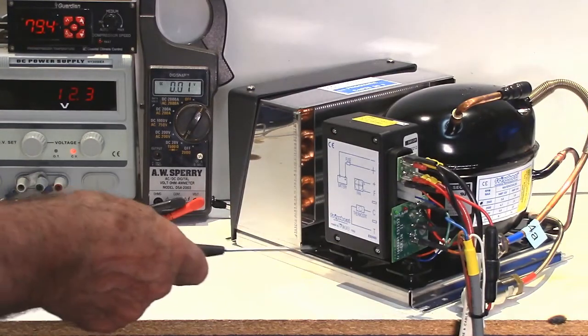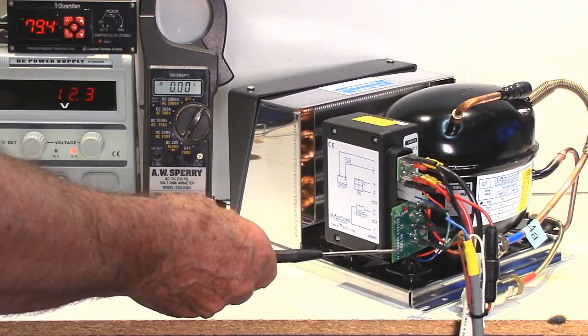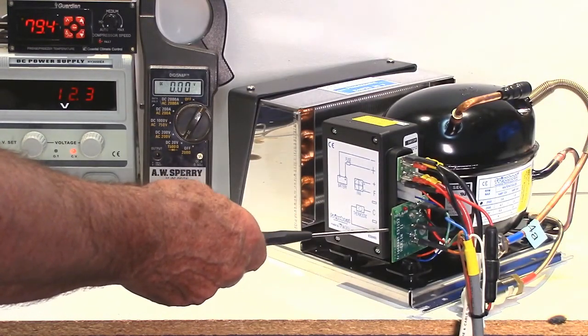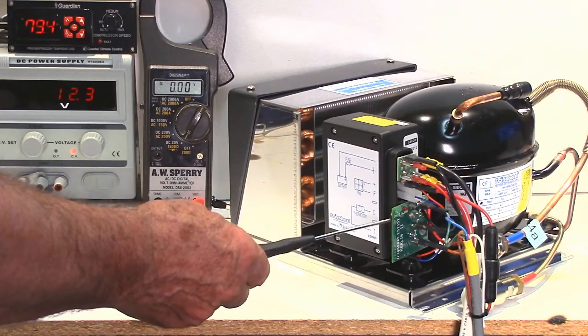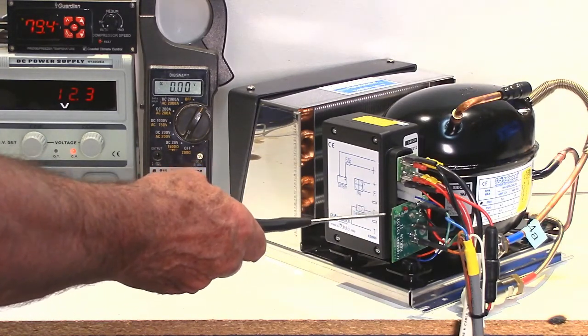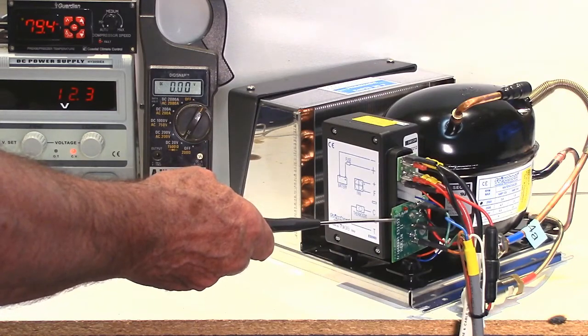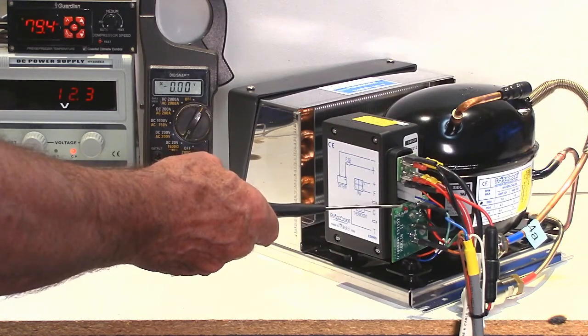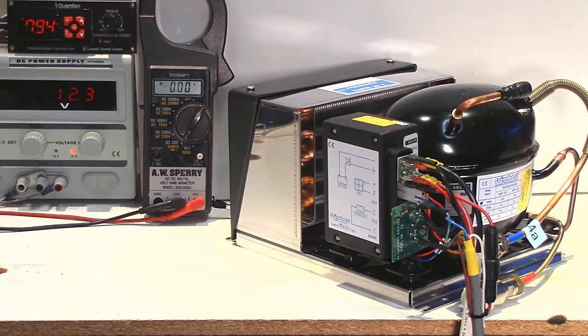So now we have the Merlin 2 Compressor Speed Controller plugged in, in place of the speed board we had before. And you can see it has two LEDs on the top. One is for the compressor speed, the green LED, and the red one is the fault LED. Both of them flashing once which means that the compressor speed should be on the lowest speed, one out of six. And the red flashing we know is because there is a problem with the voltage somewhere.